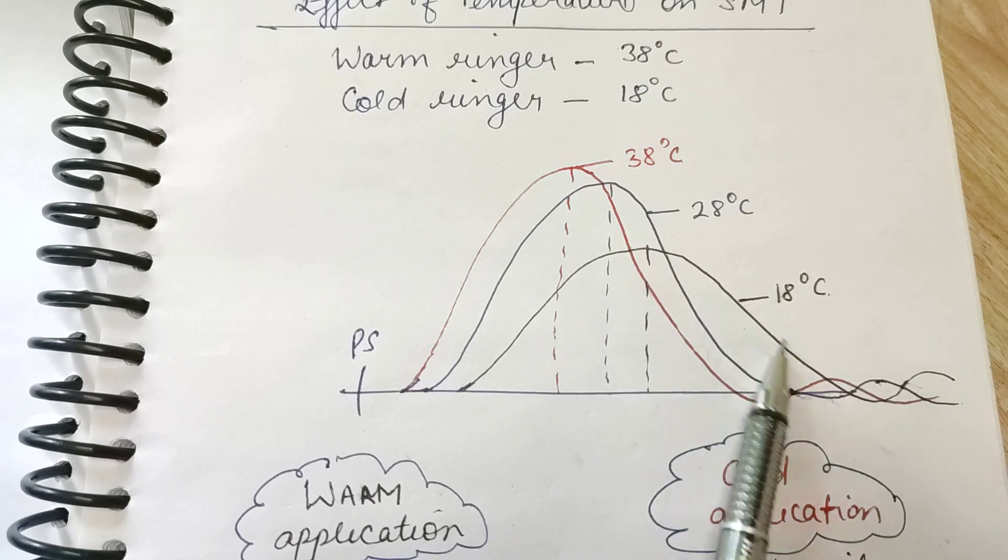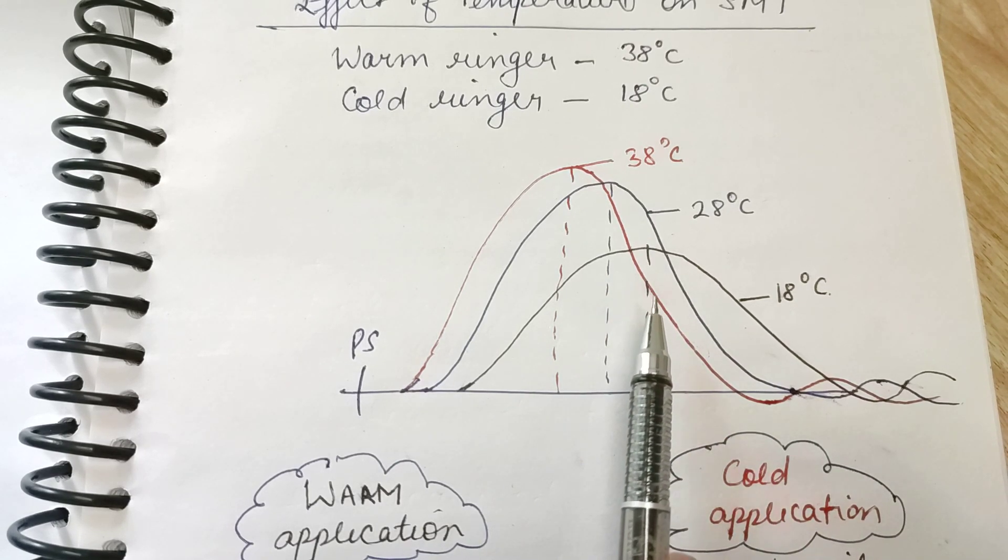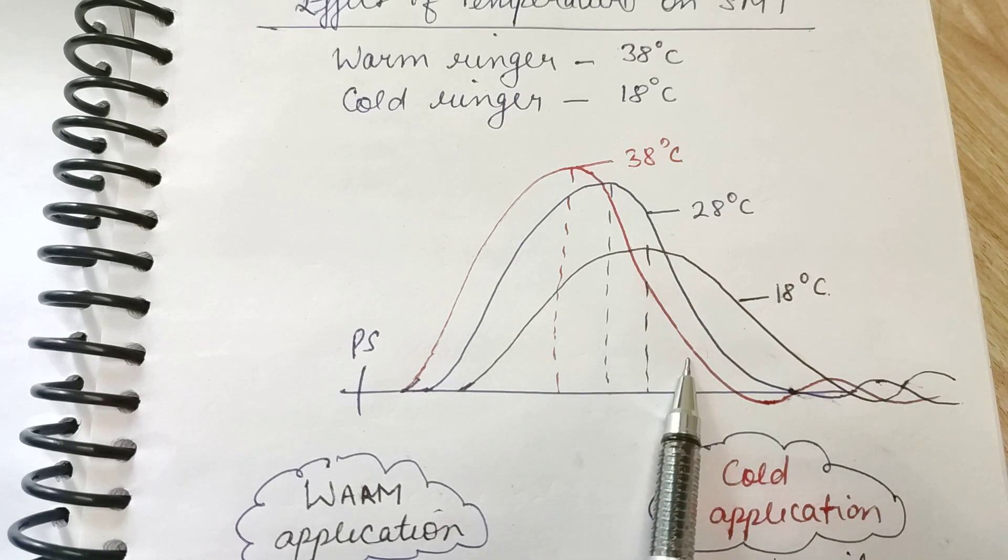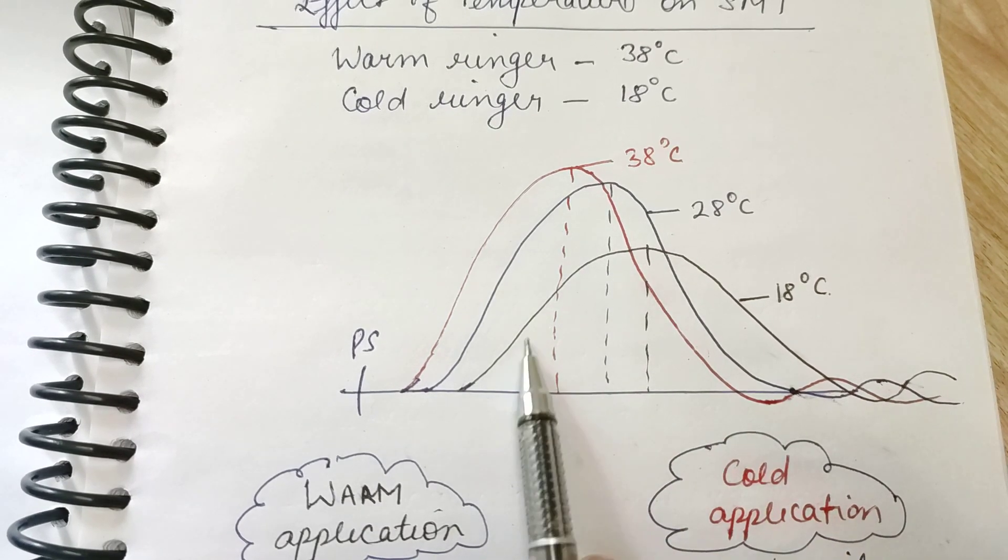And on cold application, the graph looks like this. If someone asks you what is your observation, in terms of phases we have to tell, and second thing is in terms of amplitude we have to tell.